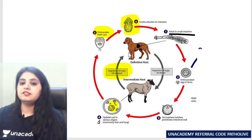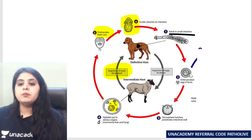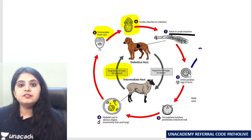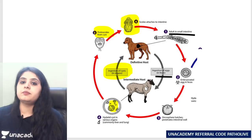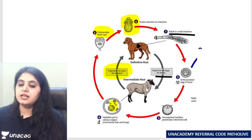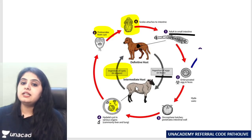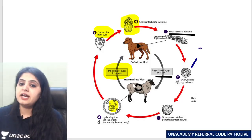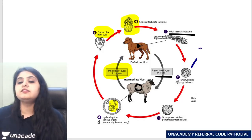Bottom line: the dog passes eggs in the feces, eggs are eaten up by sheep or cattle, in the sheep or cattle the hydatid cyst forms in the organs, and this hydatid cyst is eaten up by the dog.